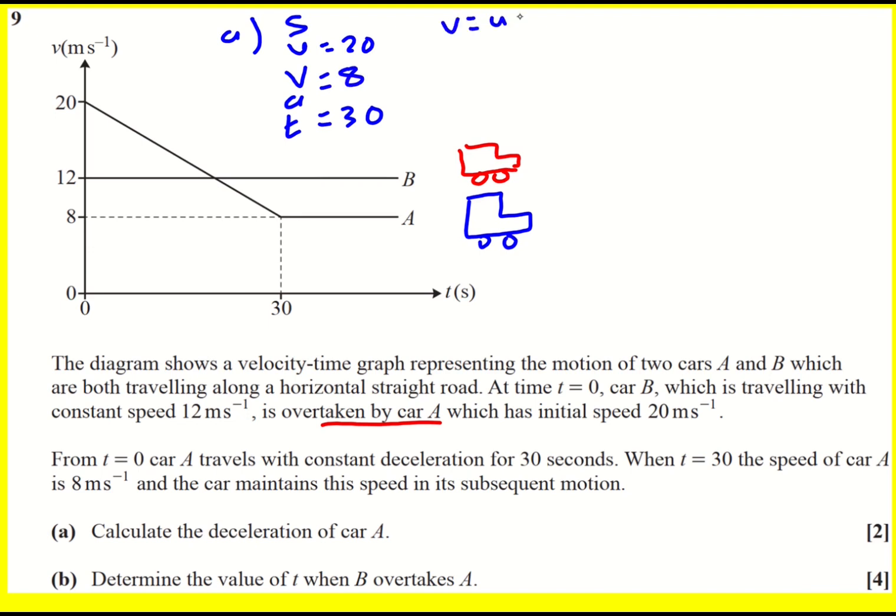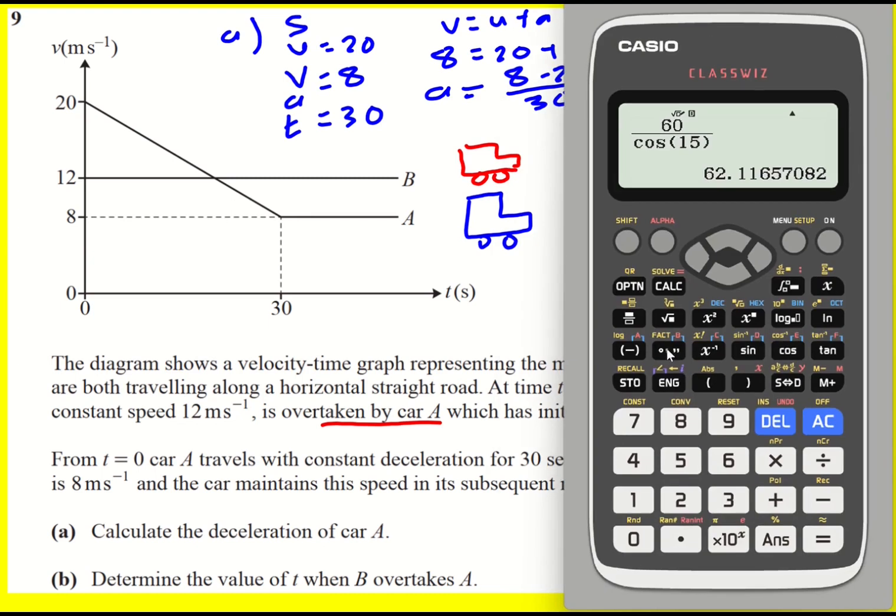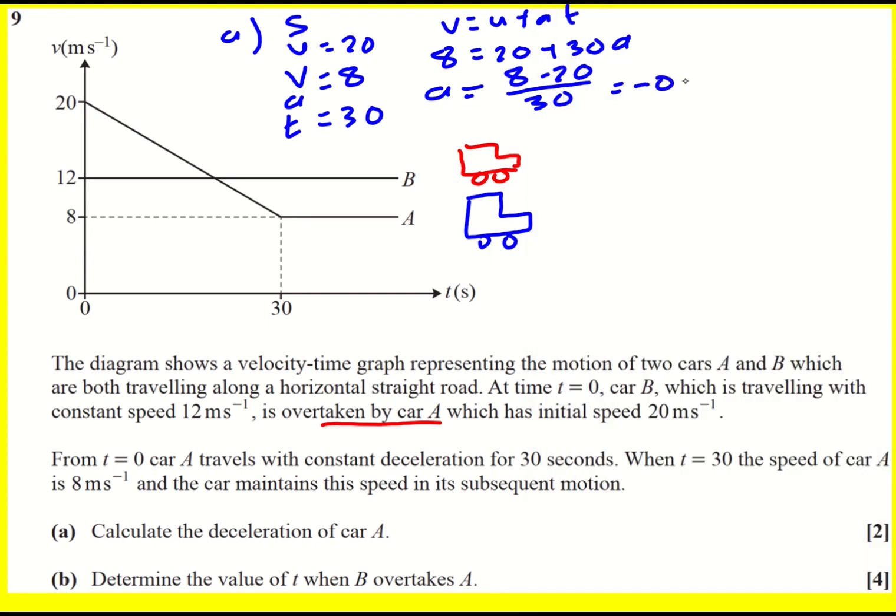So V equals U plus AT. 8 equals 20 plus 30A. Rearrange: A equals 8 minus 20 over 30. That's minus 12 over 30, which becomes minus 0.4. So the deceleration is actually then 0.4 meters per second squared, because you've already got the negative aspect here.